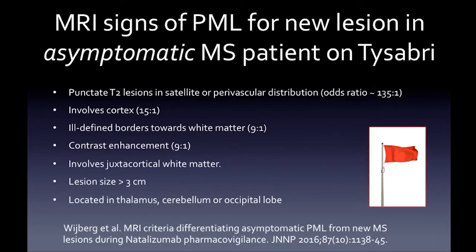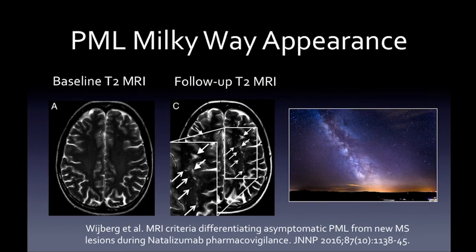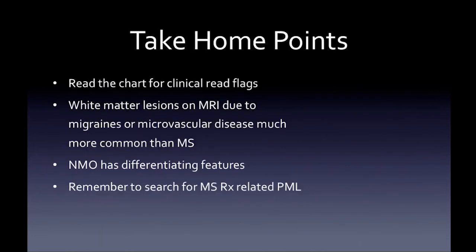MRI signs of PML for a new lesion in an asymptomatic MS patient on natalizumab: look for punctate T2 lesions in a satellite or perivascular distribution — the 'milky way sign.' The lesion involves the cortex, has ill-defined hazy borders toward the white matter, and any contrast enhancement are all signs suggesting PML in an immunotherapy-treated MS patient. The milky way sign on T2 looks just like the galaxy — the Milky Way.